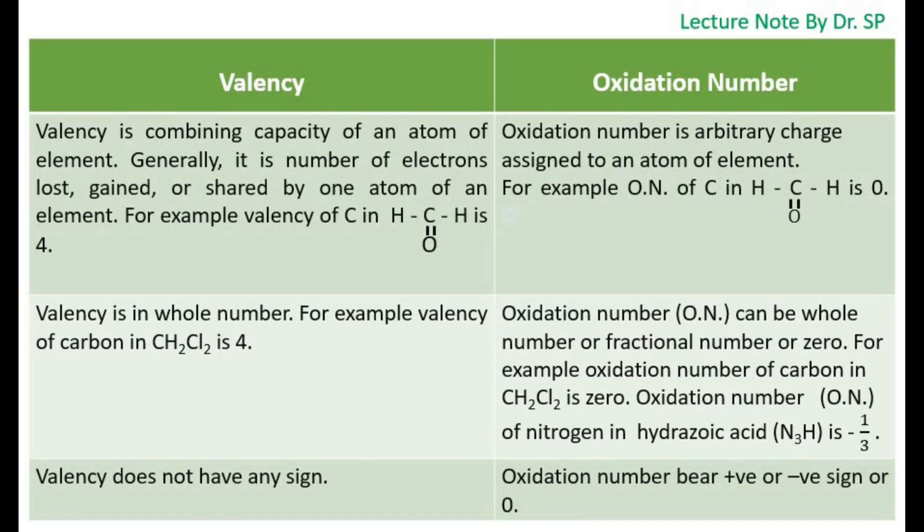Valency is in whole number. For example, valency of carbon in dichloromethane, CH2Cl2, is 4, which is a whole number. But oxidation number, O-N, can be whole number or fractional number or 0.